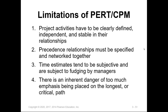The limitations of PERT and CPM include: project activities have to be clearly defined, independent, and stable in their relationships — if there are continuous changes or unknowns, the method cannot be applied; precedence relationships must be specified and networked together; time estimates tend to be subjective and are subject to adjustment by managers; and there is an inherent danger of too much emphasis being placed on the longest or critical path.